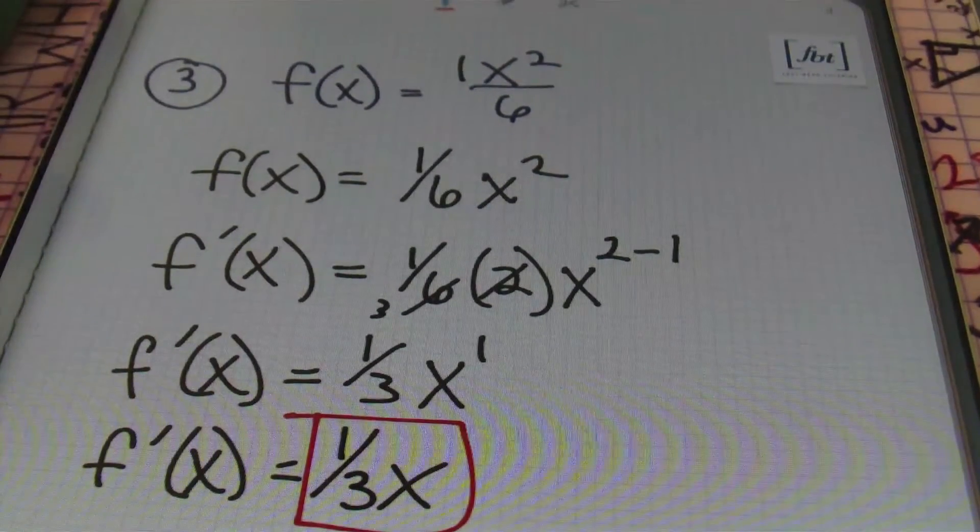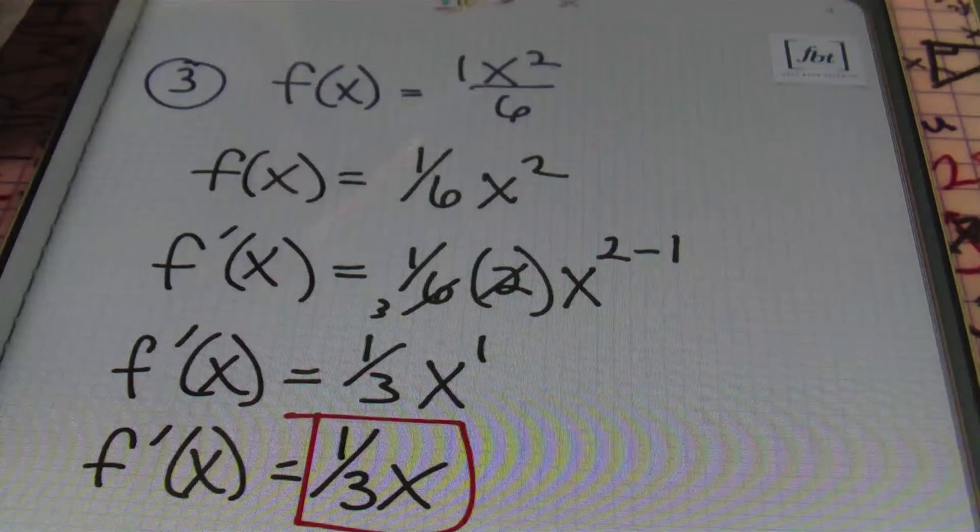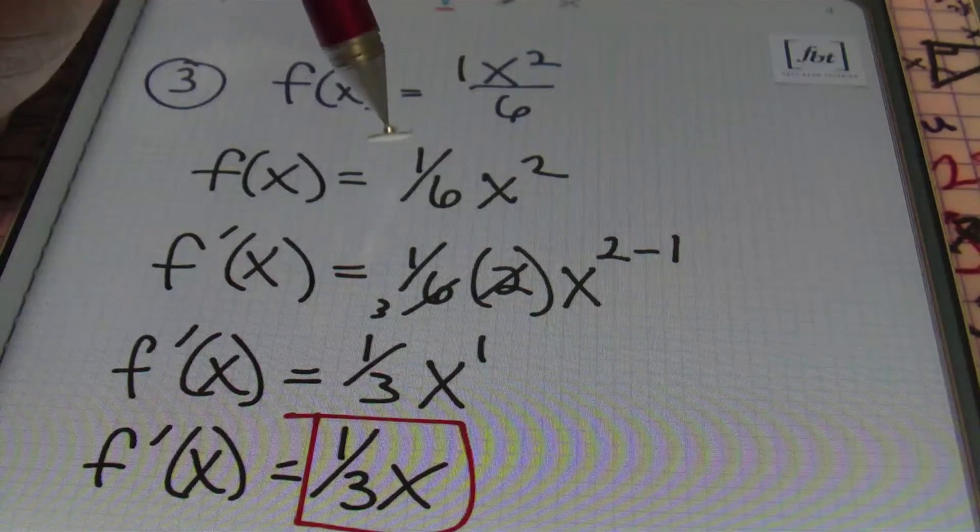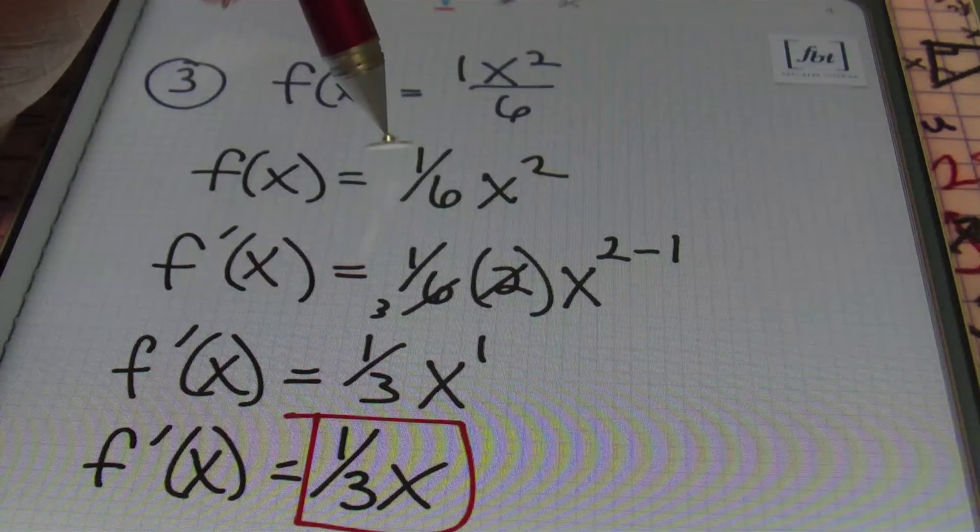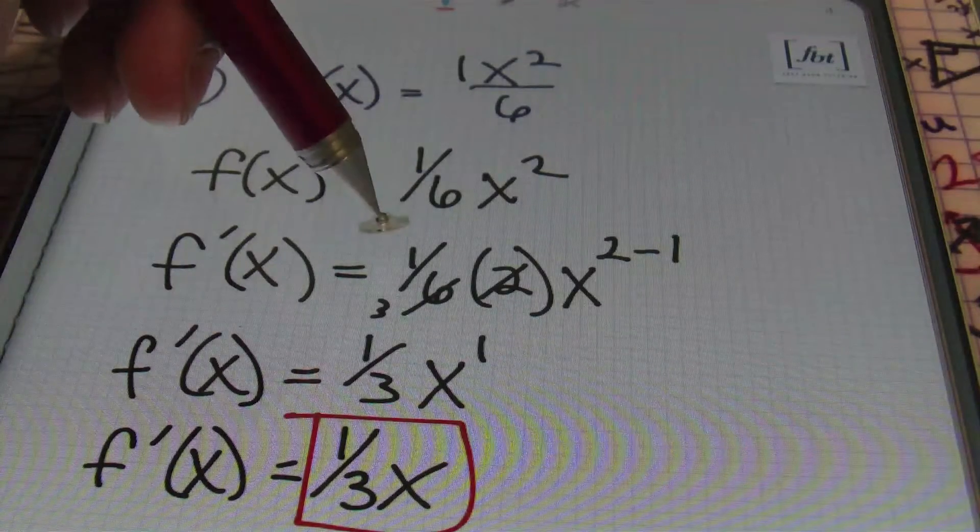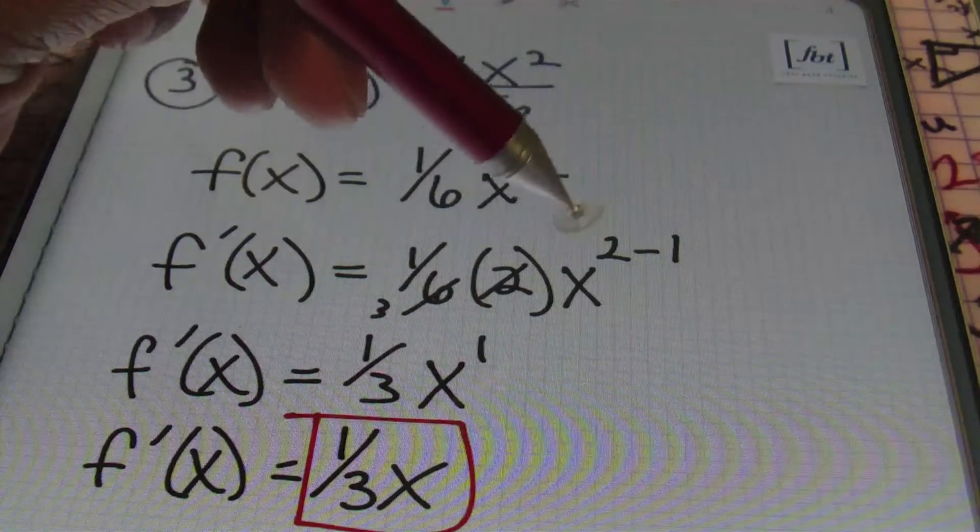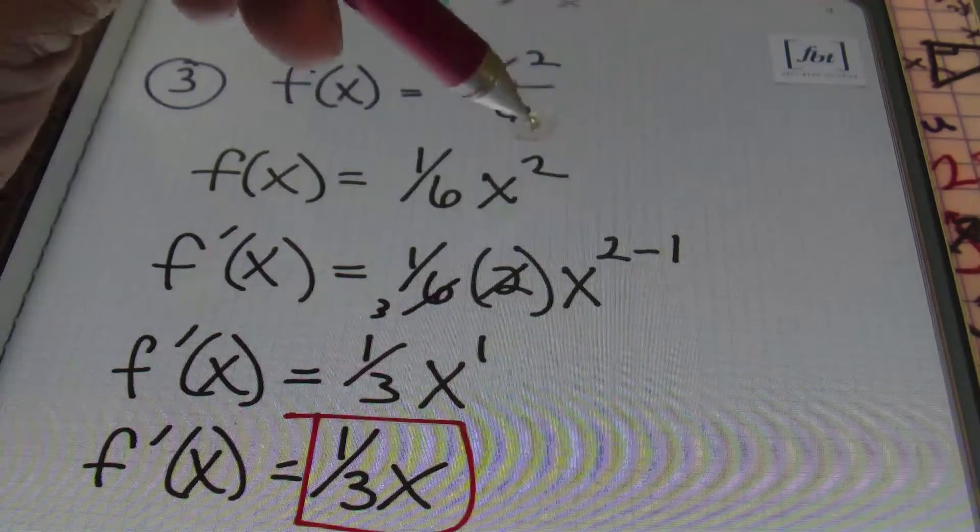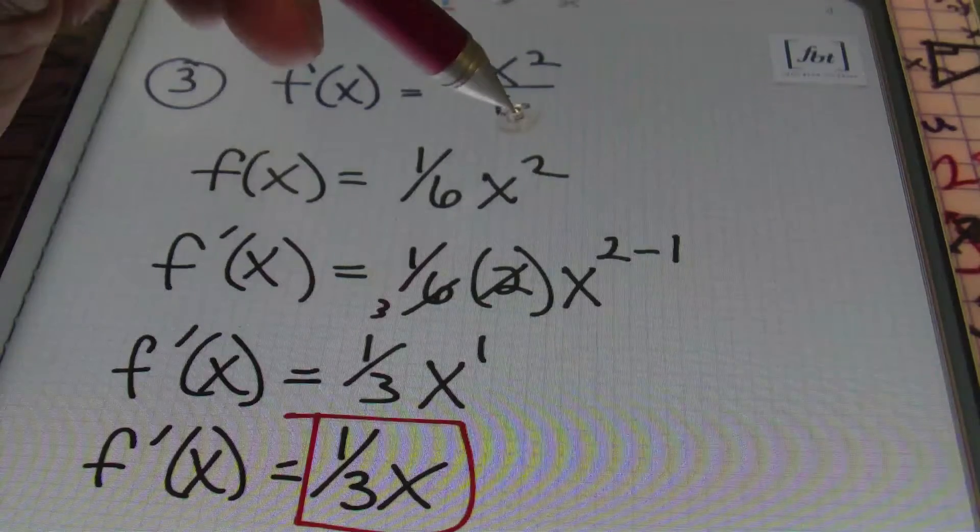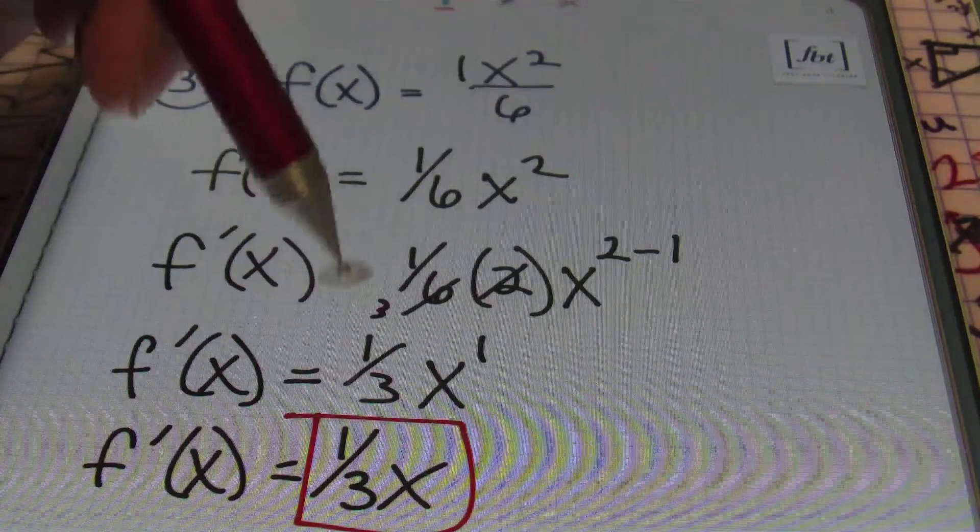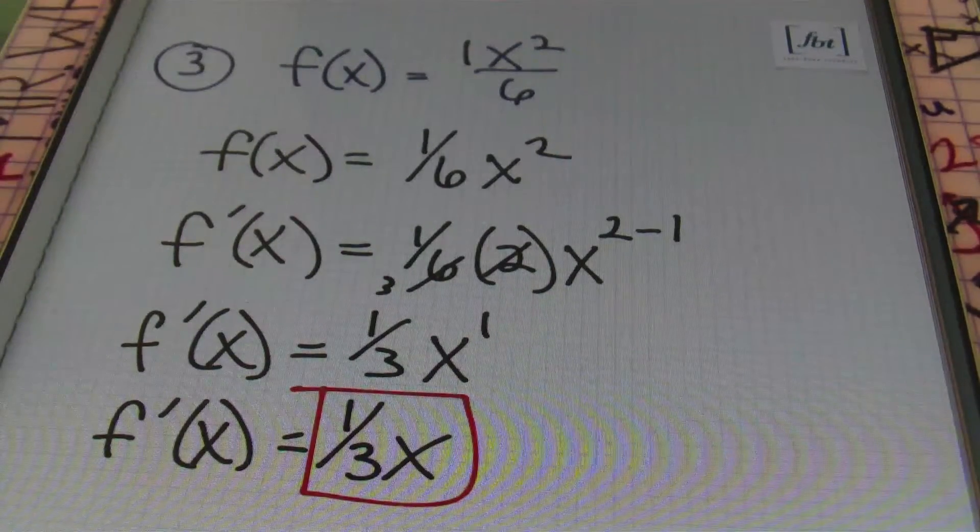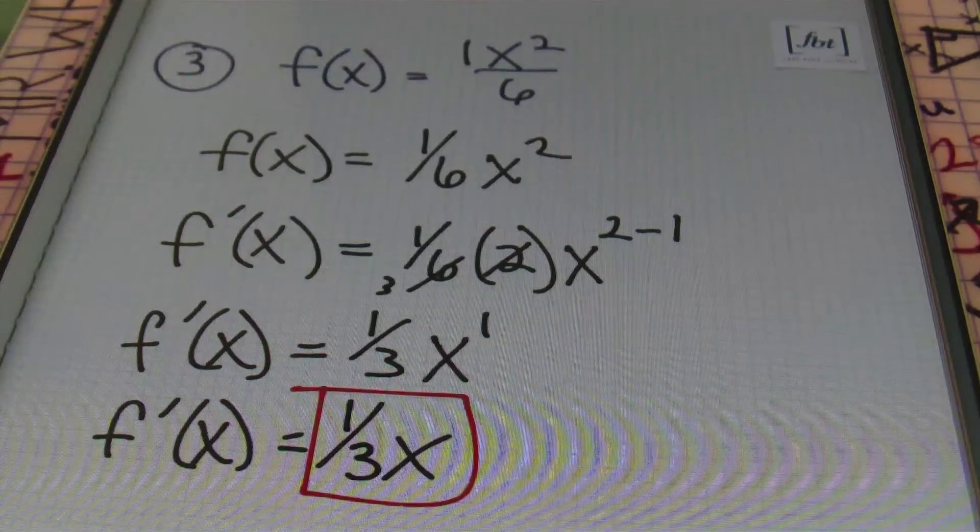Alright, so let's recap over this problem. First thing I did was with our x squared over 6, I recognized that I could factor out or rewrite our expression in the form of 1/6 x squared. Using the power rule, I multiply that coefficient of 1/6 times that original exponent of 2 times the variable raised to the original exponent of 2 minus 1. You're always subtracting 1 from your original exponent in your result. So, this gives me 1/3 after simplifying x to the first power, which can simply be written as 1/3 x. And done. That was problem number 3.